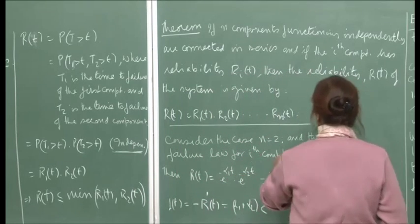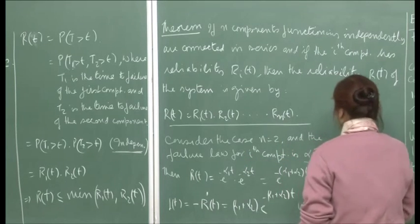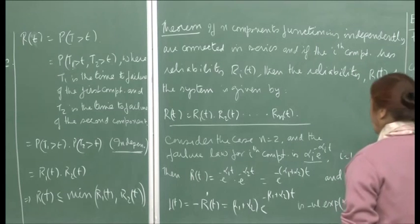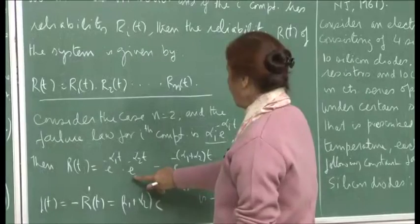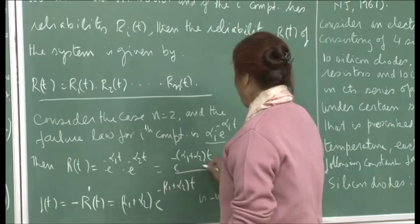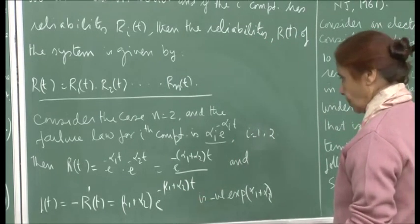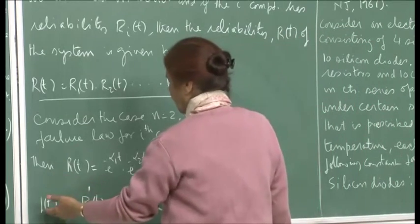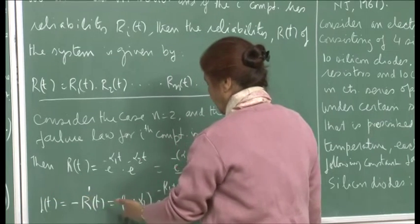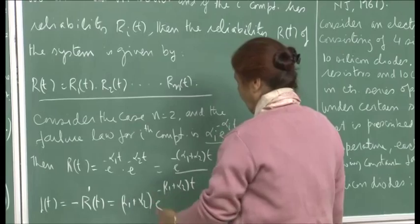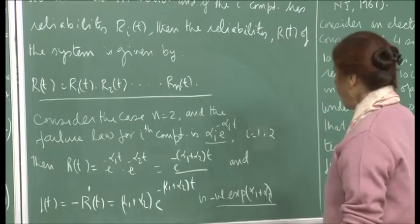Consider the case when n equals 2 and the failure law for each component is exponential. Then the reliability for the system with two components will be e^(−α1·t) × e^(−α2·t), which equals e^(−(α1+α2)·t). This is a negative exponential with parameter α1 + α2.